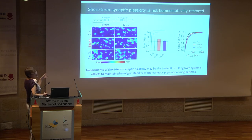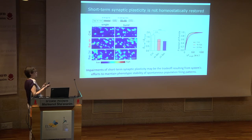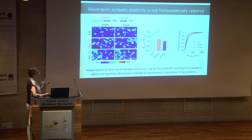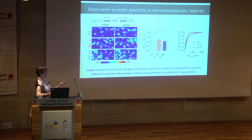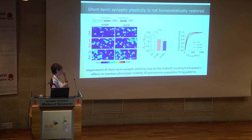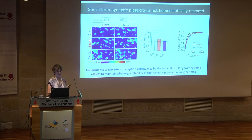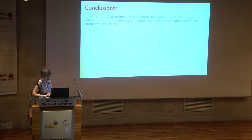Measuring the same neuron with the same drug and the same experimenter — once population activity and once synaptic activity averaged across hundreds of synapses — we can see that the network does not preserve short-term synaptic plasticity. We speculated that impairment of short-term synaptic plasticity is a trade-off resulting from the system's effort to maintain phenotypic stability of spontaneous population firing patterns.